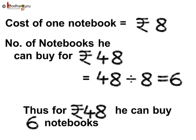Let us see again how we solve this problem. Cost of one notebook is equal to 8 rupees. So the number of notebooks he can buy for rupees 48 is equal to 48 divided by 8, which is equal to 6. Thus for rupees 48, he can buy 6 notebooks. Understood?